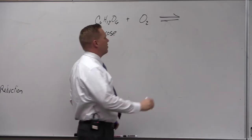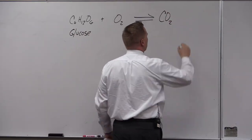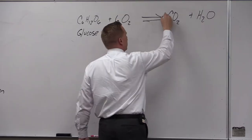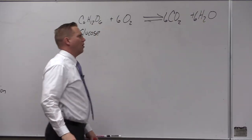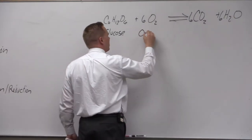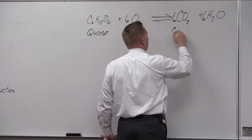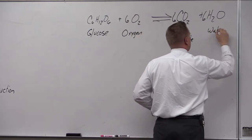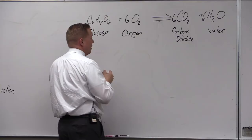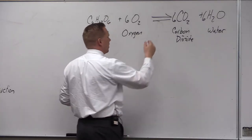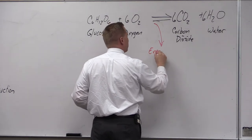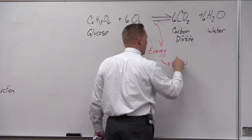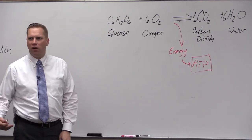Those are two reactants, and then we're going to produce CO2 and water — six of each — to form our balanced equation. That's the overall pathway for cell respiration. We're not trying to make CO2 or water; those naturally come out. We're really trying to get energy, and that energy comes to us in the form of ATP, which we use in all our other cell processes.